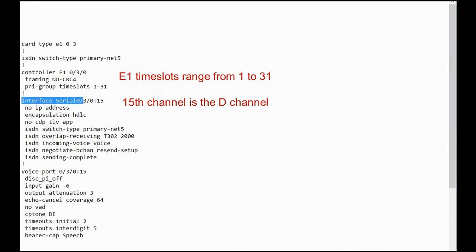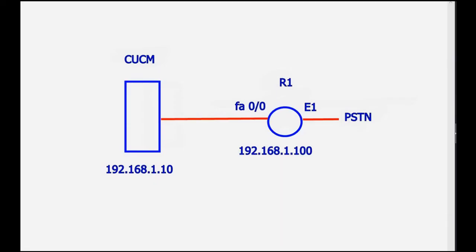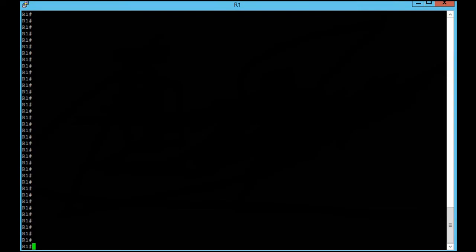Then configure the interface serial and the work port. After configuring E1, we should configure our dial peers. For the connection between the router and PSTN we need POTS dial peers, and a VoIP dial peer for the connection between the router and the CUCM server.